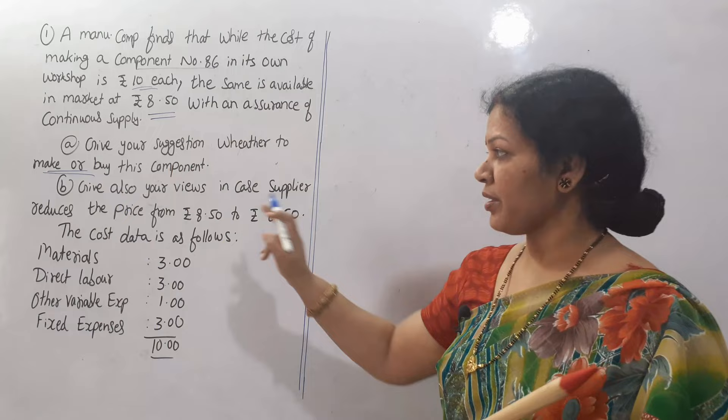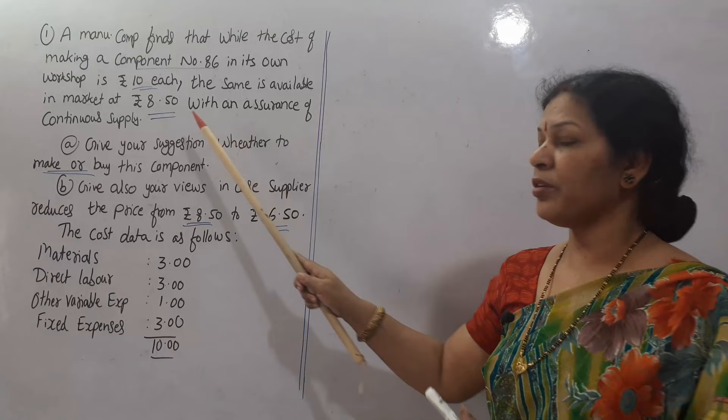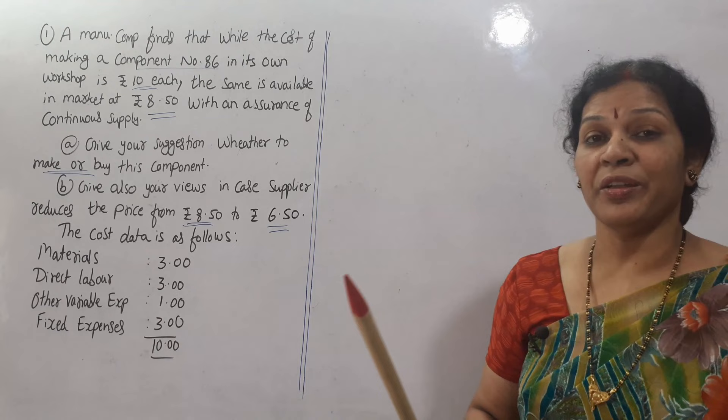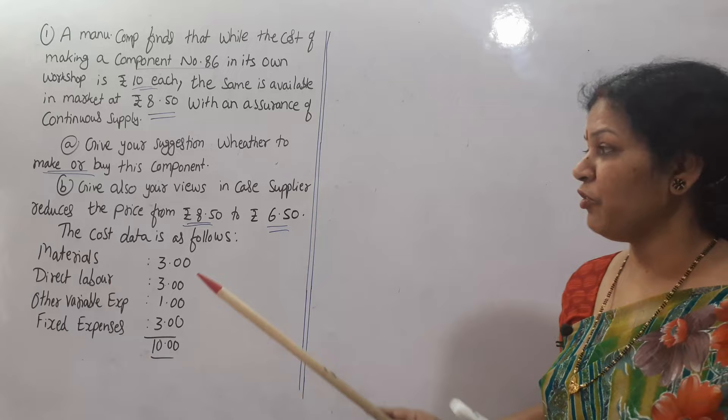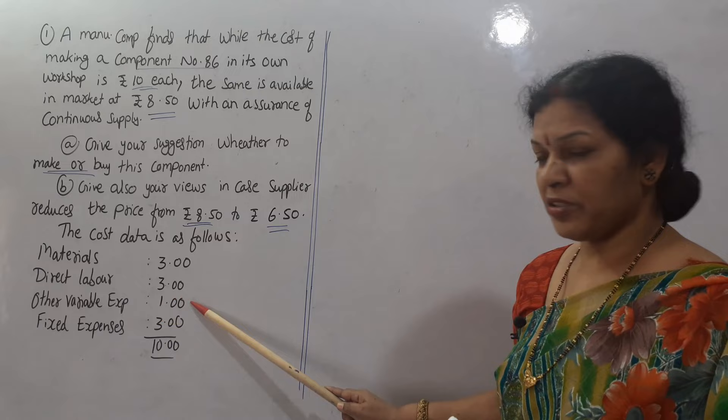The second question is: give your views in case the supplier reduces the price from 8 rupees 50 paisa to 6 rupees 50 paisa. So we have two cases to answer. The cost data is as follows — material: 3 rupees, direct labor: 3 rupees, other variable expenses: 1 rupee, fixed expenses: 3 rupees, total: 10 rupees.